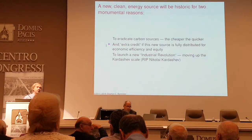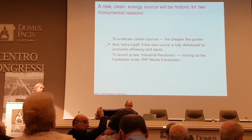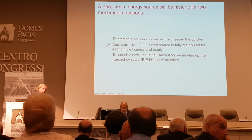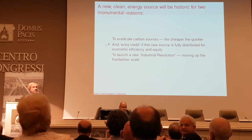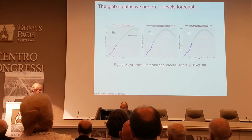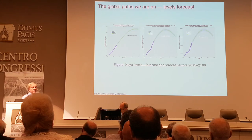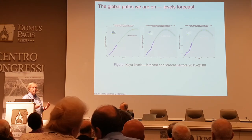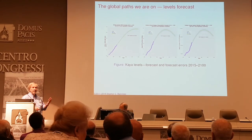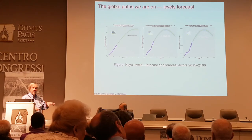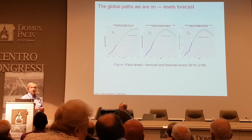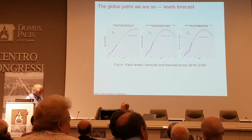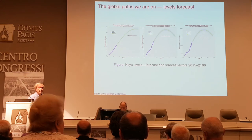Question from Josh: he couldn't read the timeline but asks where on the projection the curve reaches 2 degrees. The speaker responds he hasn't done that exact calculation, but he integrated the carbon forecast to get the total amount of carbon, added it to the existing stock, and that gives a high three or low four degrees according to climate science models. He estimates the 2-degree threshold would be around 2025 to 2030.